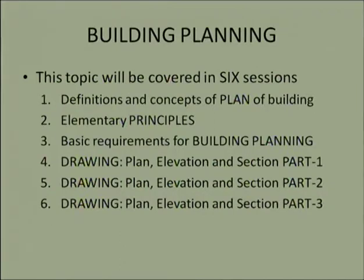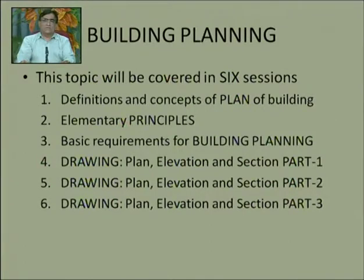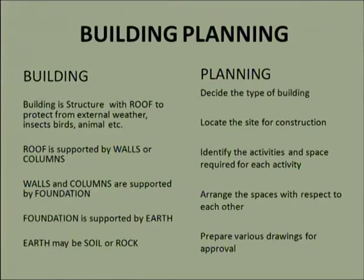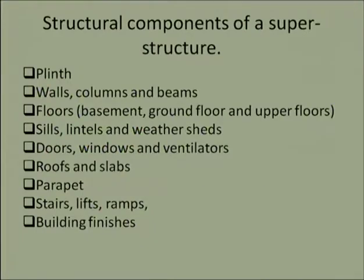We classified the buildings based on the purpose for which they are used — basically residential and non-residential. In non-residential we classified buildings into different categories: public building, commercial building, and industrial building. Then we discussed the various component parts of the building like plinth, walls, columns, beams, floors, seals and lintels, weather shade, doors, windows, ventilators, roof slabs, parapet, stair, lift, and ramps.